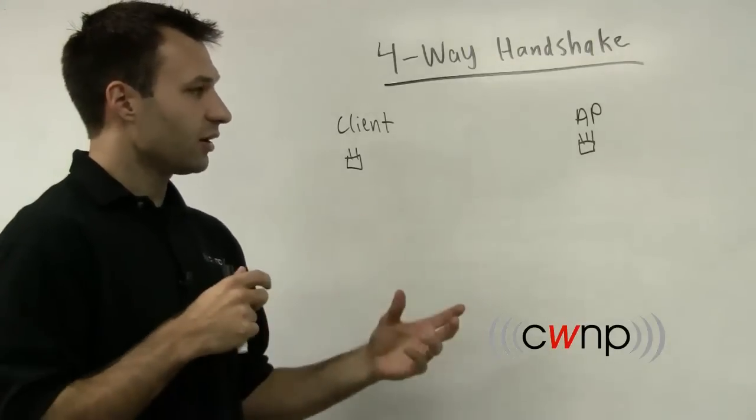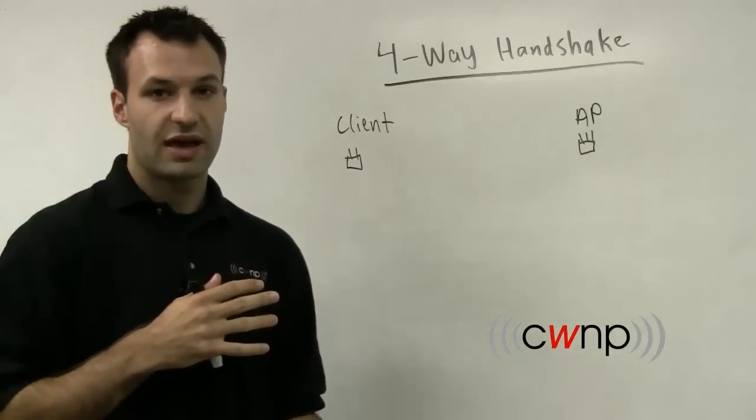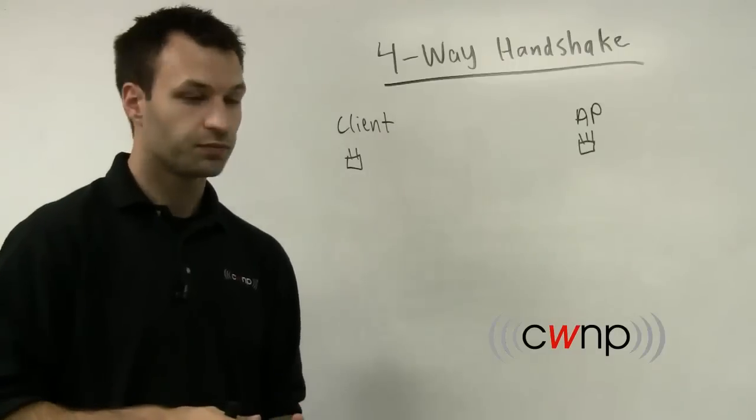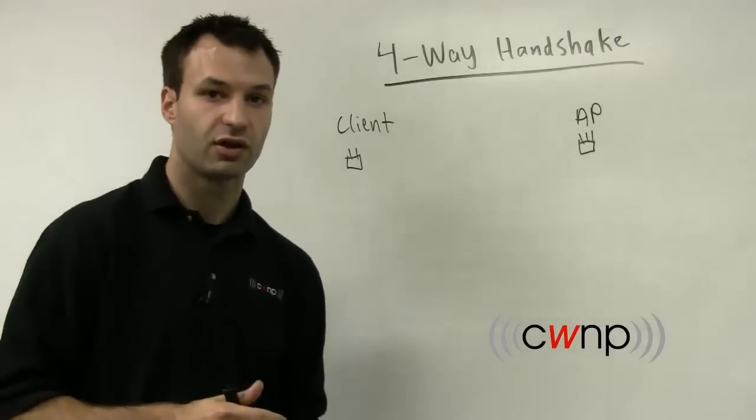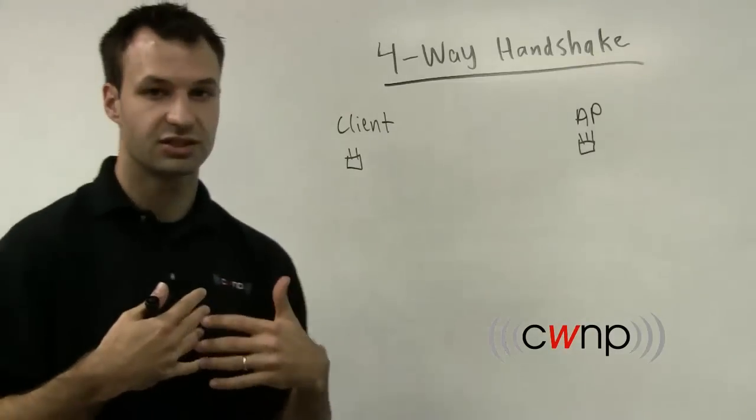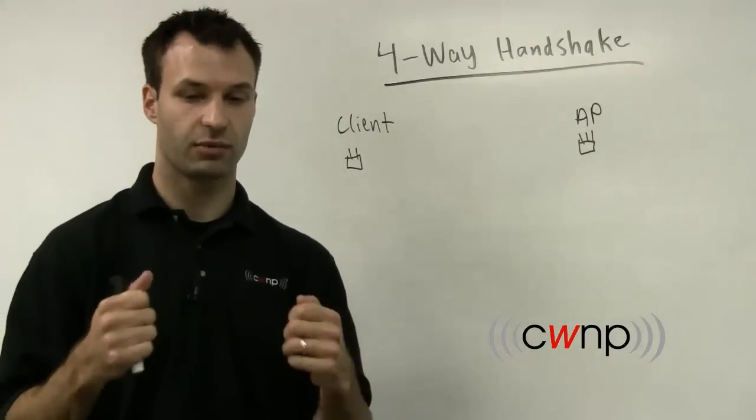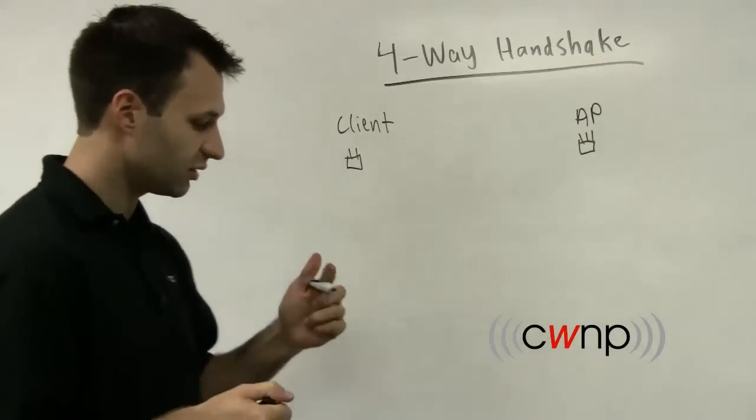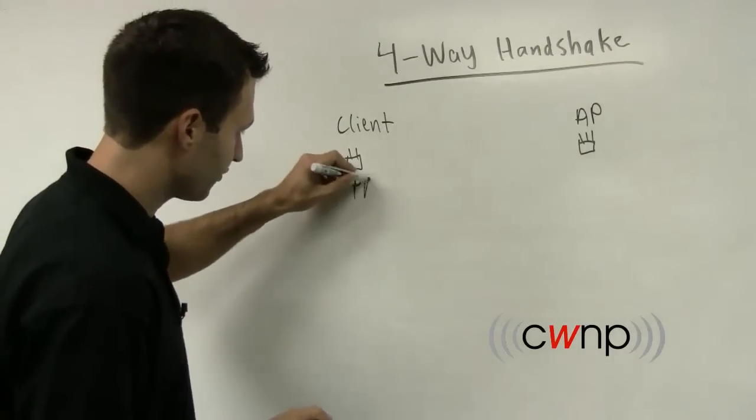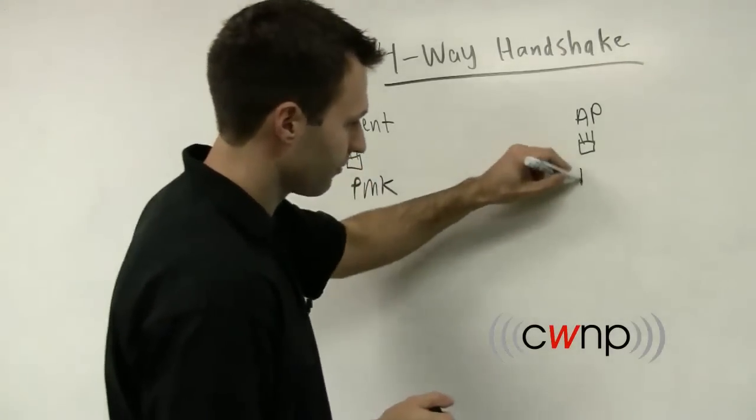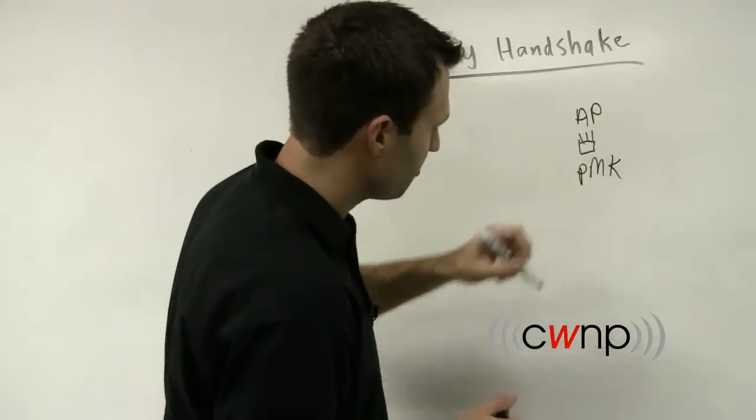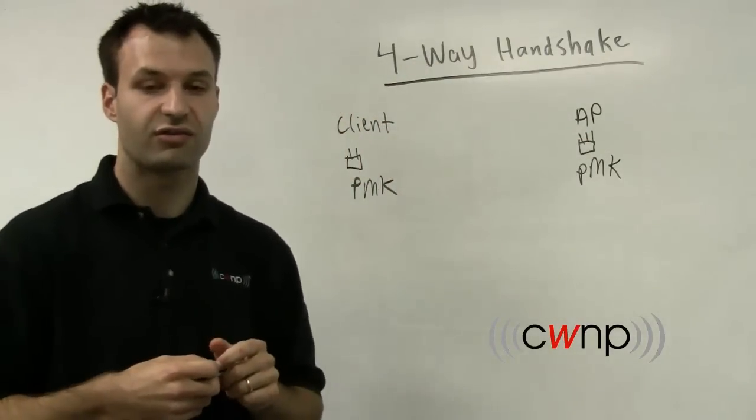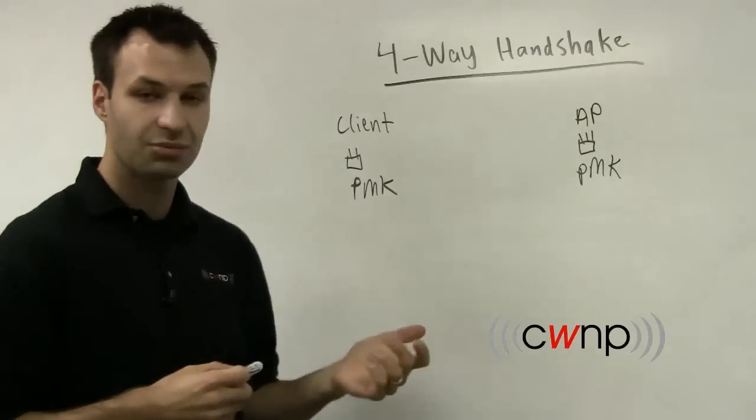And depending on whether you're using WPA or WPA2 Personal or WPA or WPA2 Enterprise, there's going to be an authentication process that derives some source keying material. And that source keying material is called a pairwise master key or a PMK. Now with WPA and WPA2 Personal, the passphrase is mapped directly to the PMK.